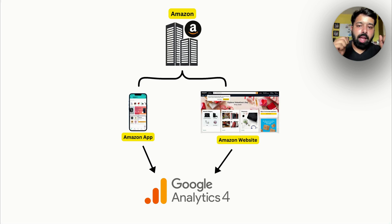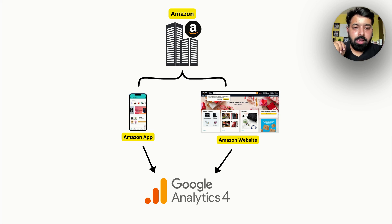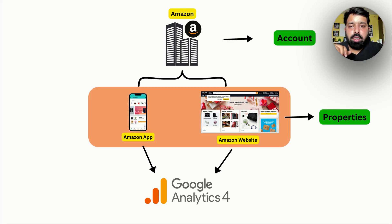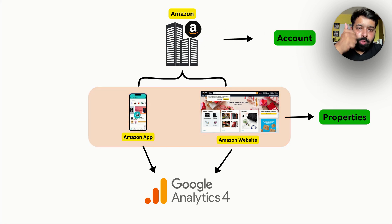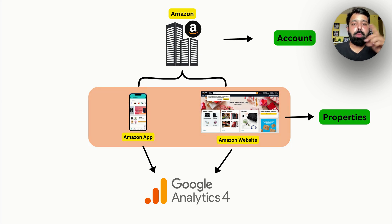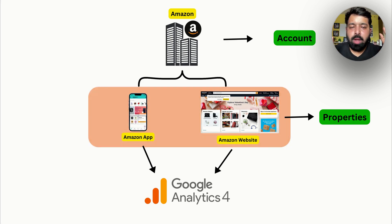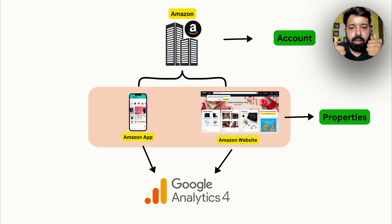In GA4, the app is a property, the website is a property, and the account is a property. For Amazon in GA4, one app is a property and one website is a property. You can have multiple properties under one account.